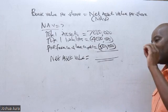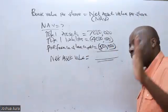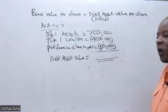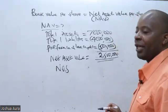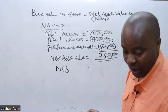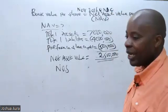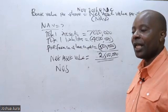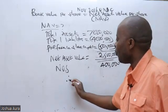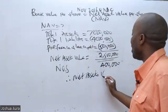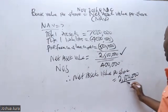Book value per share is the same as net assets value per share. We take total assets minus all the liabilities, minus all the intangible assets, minus your preference share capital — Frederick is giving me 2.5 million. Then I'll ask myself: how many ordinary shares do we have? There are 400,000 outstanding ordinary shares. Therefore, the net assets value per share will be 2.5 million divided by 400,000.